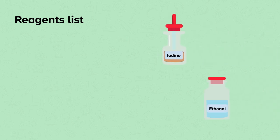Let's now look at the reagents that we're going to need. Reagents are the substances or chemicals used in an experiment to bring about a chemical reaction or to test if a reaction has occurred. The reagents needed in this experiment are iodine and ethanol.